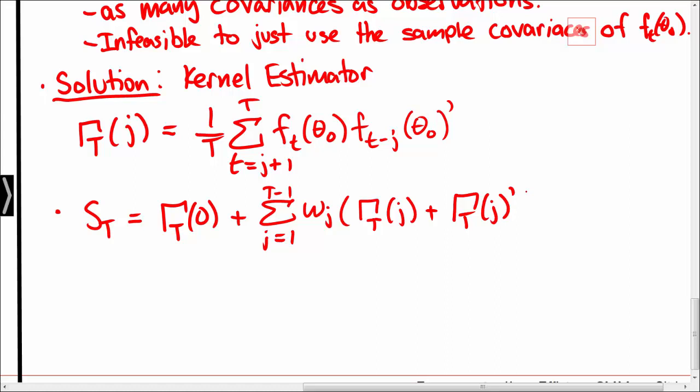Here ωj is some weight function. ωj will typically put positive weight on covariances that have a low order, for small j's, and then put very little or perhaps zero weight to autocovariances of higher order.